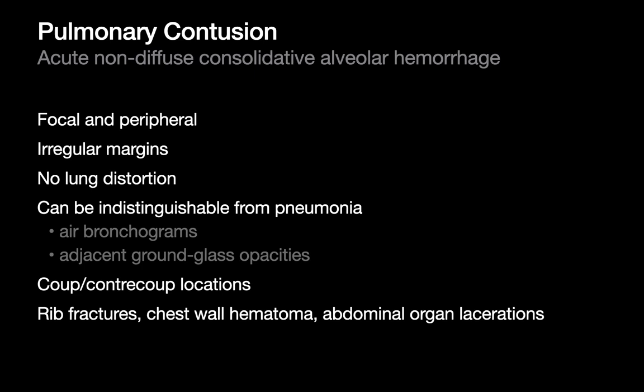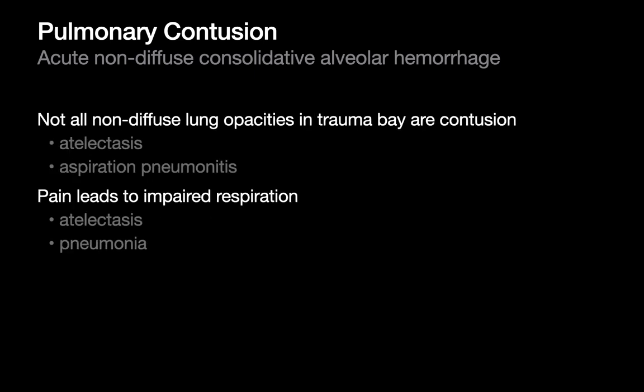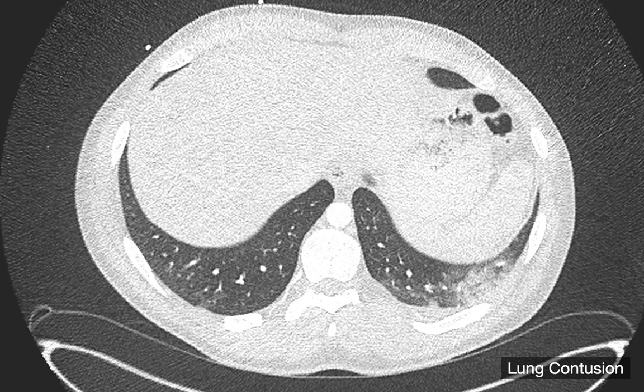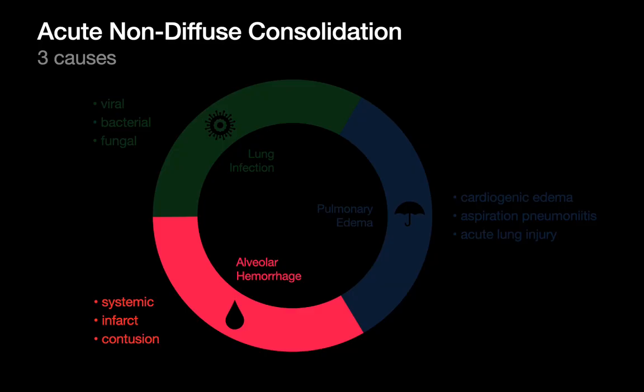Pay attention to signs of superficial trauma near the consolidation — rib fractures or hematoma nearby — and look for coup-contrecoup injury. Not every non-diffuse consolidation in a trauma patient is contusion: atelectasis can mimic focal consolidation, aspiration pneumonitis can occur in the trauma bay, and pneumonia can develop in trauma patients a few days later. Here's an example of contusion in the posterior left lower lobe.